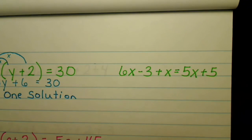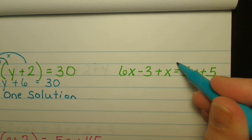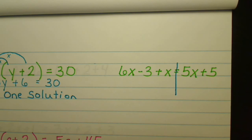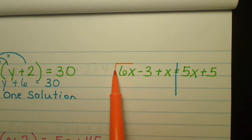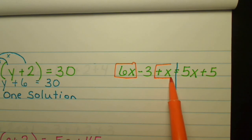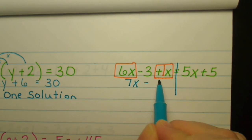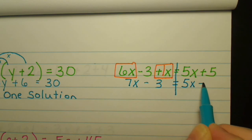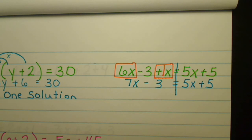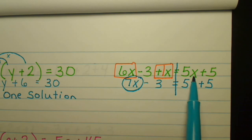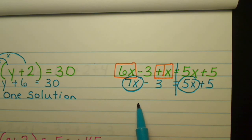Let's look at this one. First, check if you need to do the distributive property — no, you don't. Then see if you can combine any like terms on either side of the equal sign. Yes — you have a 6x and a positive x, which is understood as 1x. Combining those like terms gives 7x minus 3 equals 5x plus 5. Now check the coefficients — are they the same? No, they're not. Which tells us we have one solution.